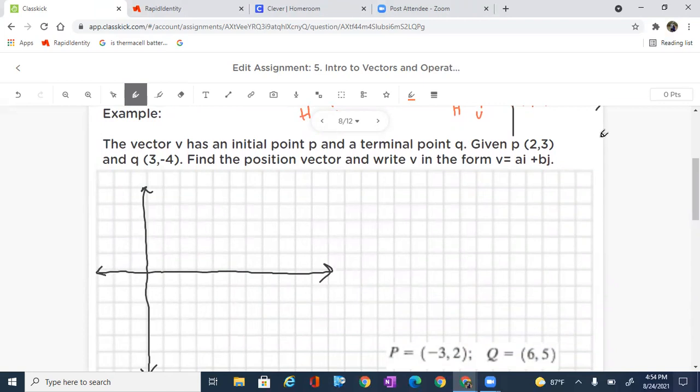So it says the vector V has an initial point P, so we're going to be starting at P, and that terminal point Q, and we're going to start at P, go through Q, and it gives us those points. It says, find the position vector and write V in the form AI plus BJ. So let's go ahead and put our information down. We have P, which is going to be 2, 3, or over 2 and up 3. And then we are also going to have Q, which looks like it is going to be 3 down 4, 3 down 4 to negative 4.